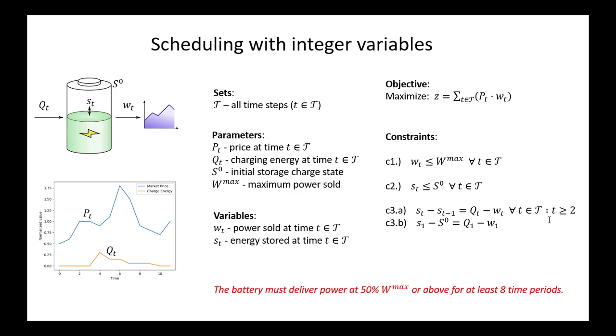And that binary variable, for every single time step t, is going to indicate whether or not the system is producing power. Once we've introduced that binary variable, then we can add constraints to it that enforce that the number of time periods is satisfied and relate the state of the operation to satisfying the criteria that we have. So let's look at our original formulation and how it's going to be modified to achieve this criteria.